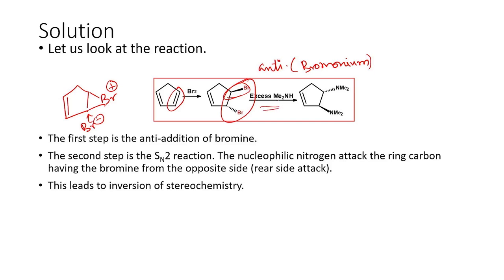The next step is SN2 attack by dimethylamine. When dimethylamine attacks, the stereochemistry of the top carbon is inverted and the bottom carbon stereochemistry is also inverted. The last step is inversion of stereochemistry. The overall product formed has the two substituted groups adjacent to each other.